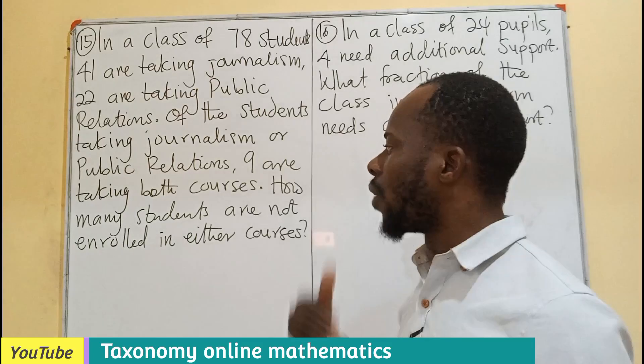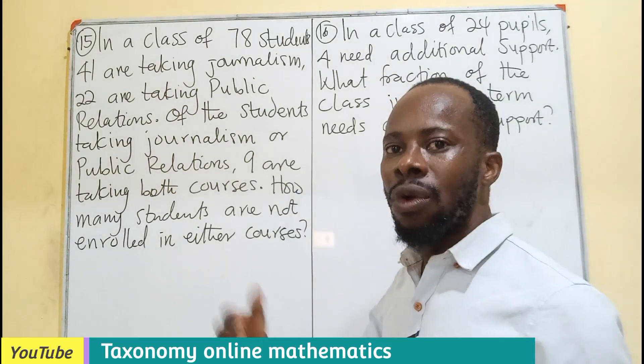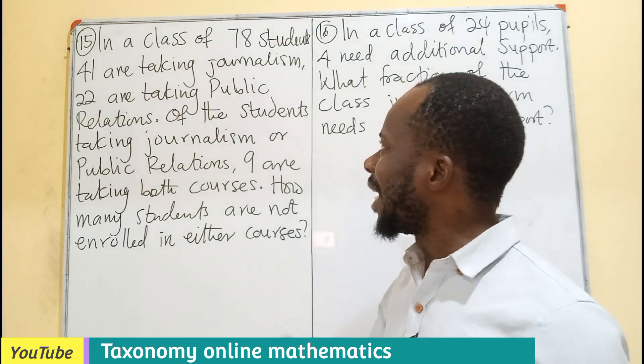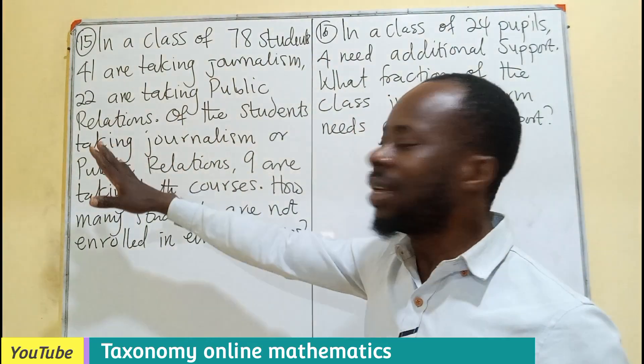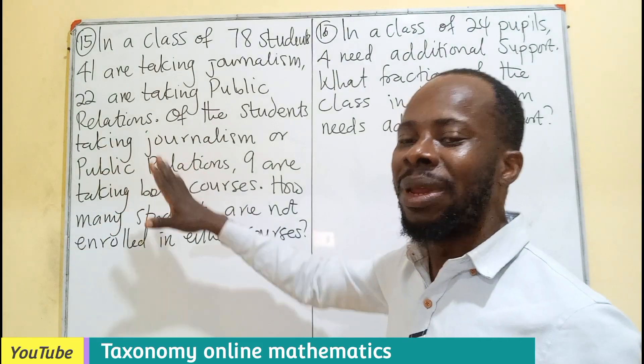How many students are not enrolled in either courses? It means they are in the class, they are part of the 78 students, but they are neither doing journalism or public relations.